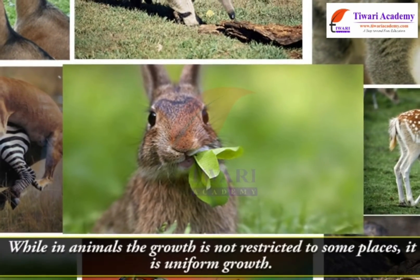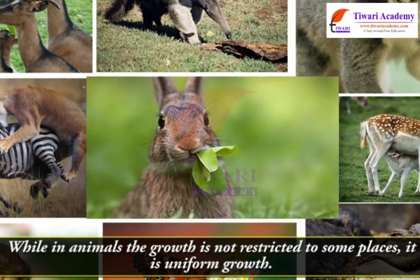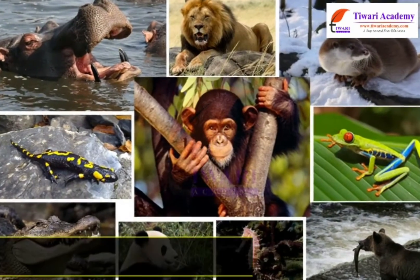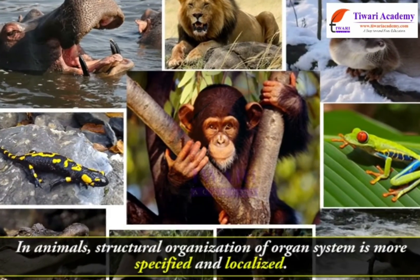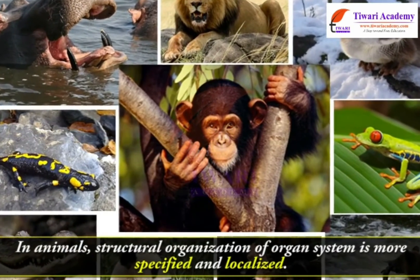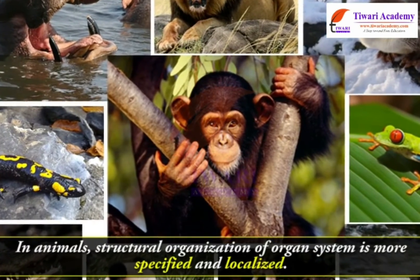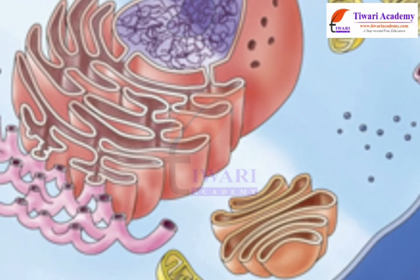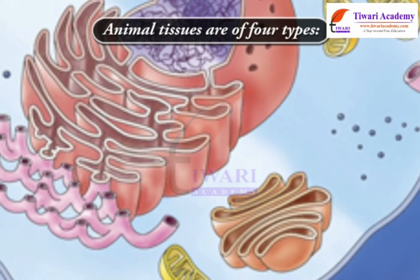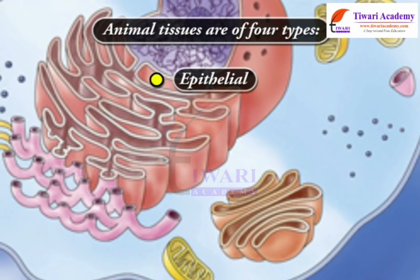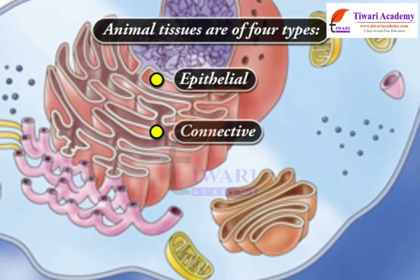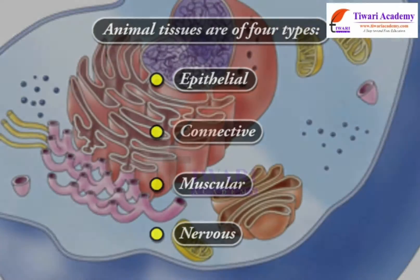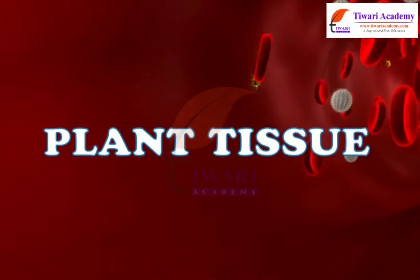In animals, growth is not restricted to specific places — it is uniform. The structural organization of organ systems in animals is more specified and localized. On the basis of their functions, animal tissues are of four types: epithelial, connective, muscular, and nervous.